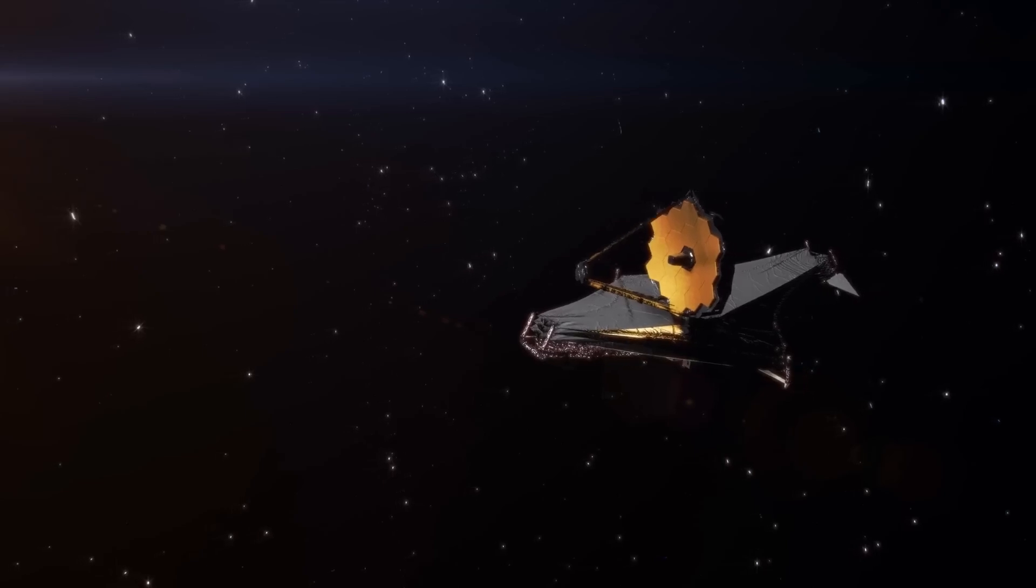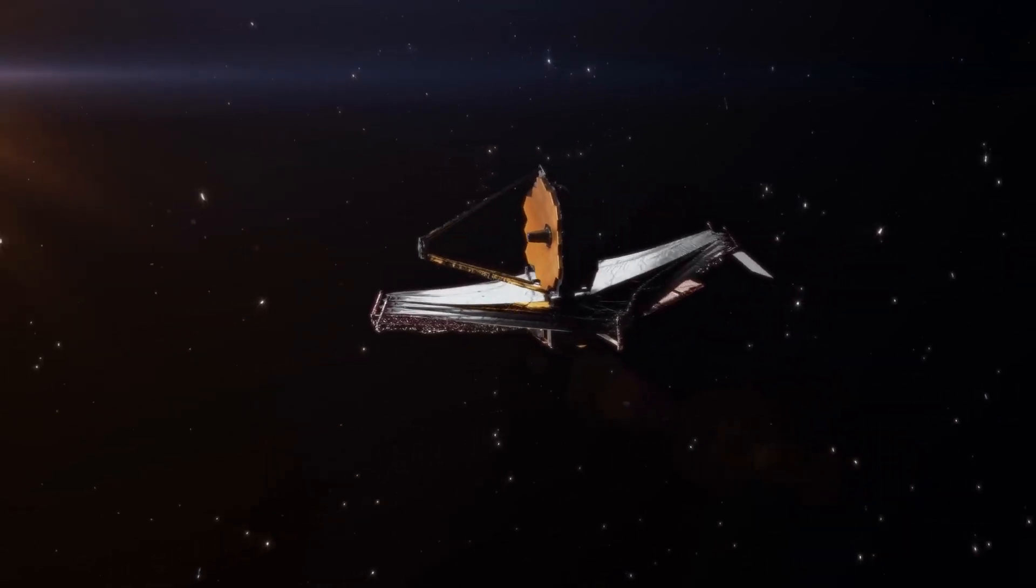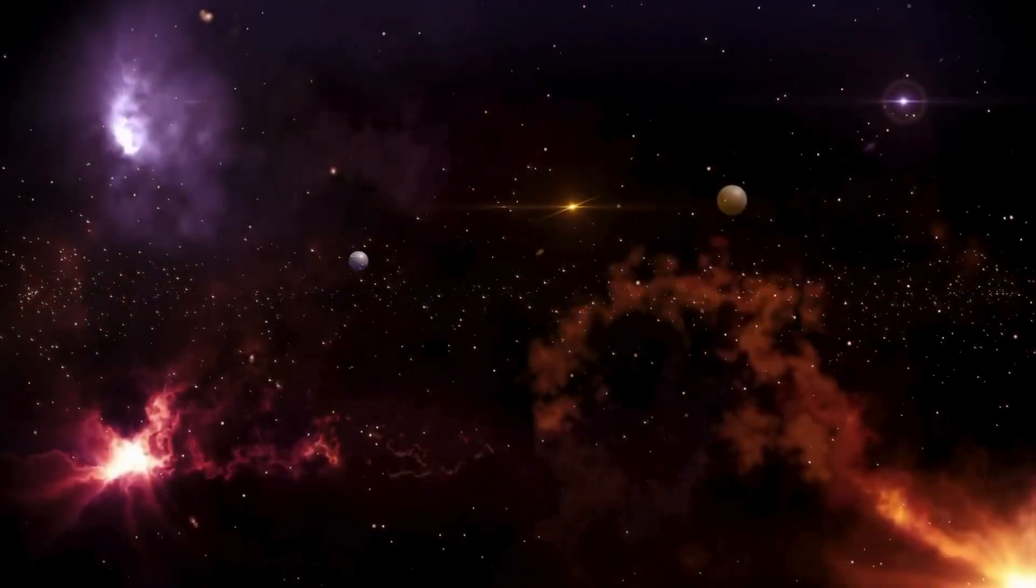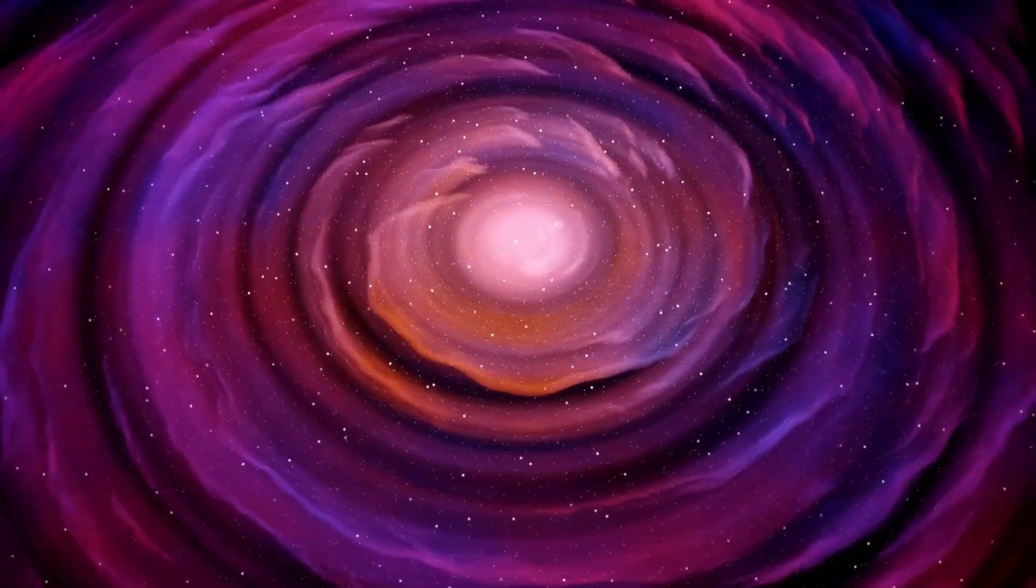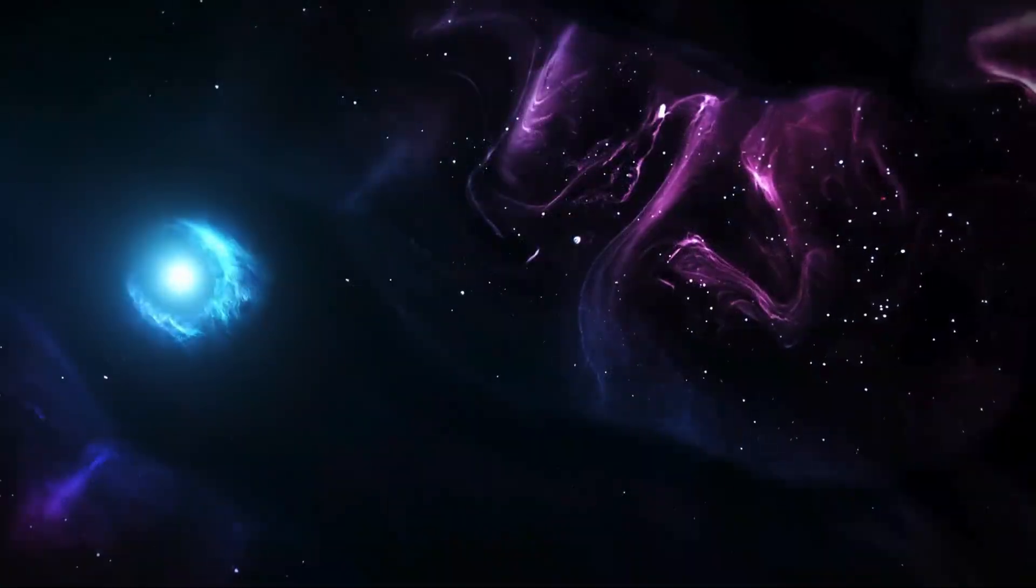A light-year is a unit of distance that light travels in one year, which is about 5.88 trillion miles or 9.46 trillion kilometers. So the diameter of the observable universe, 93 billion light-years, is an unimaginably vast expanse spanning approximately 5.68 times 10 to the 23 miles.